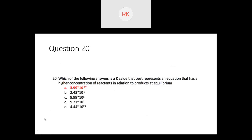Question twenty: which K value best represents an equation with a higher concentration of reactants relative to products at equilibrium? Remember K = products/reactants. If we want a big denominator and small numerator, K is a small number. The smallest value — approximately 4 × 10⁻¹⁷ — answer A — would have the highest concentration of reactants relative to products at equilibrium.